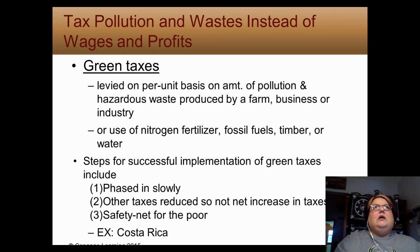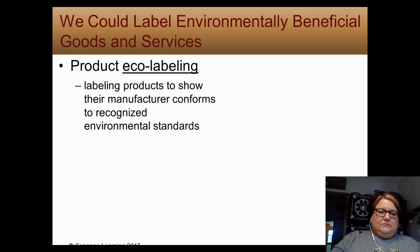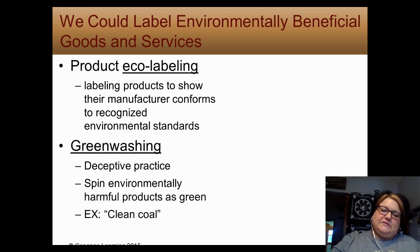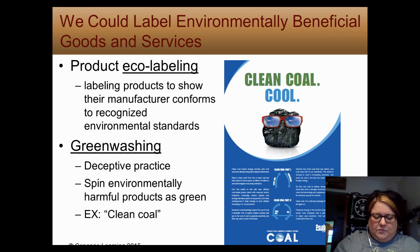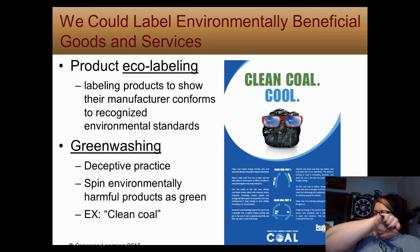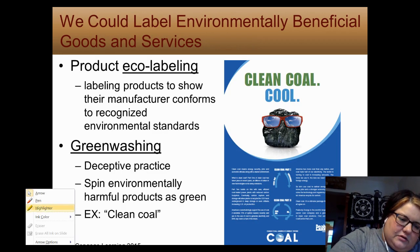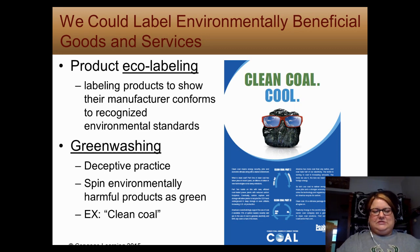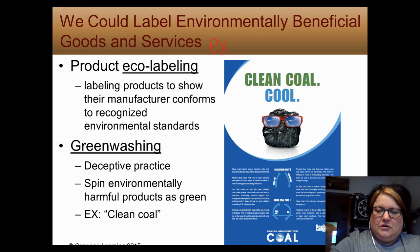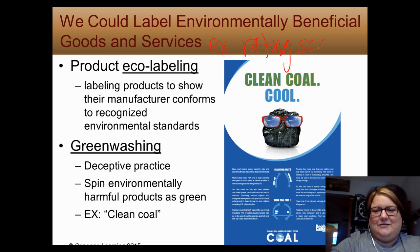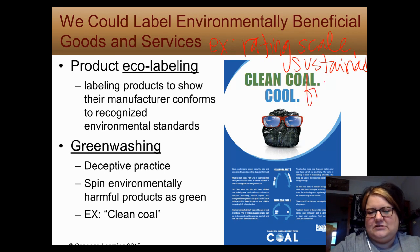Number five is about eco-labeling. Eco-labeling puts it in the hands of consumers to show environmental standards. Examples include a rating scale, sustainable fish certification, and sustainable timber certification.